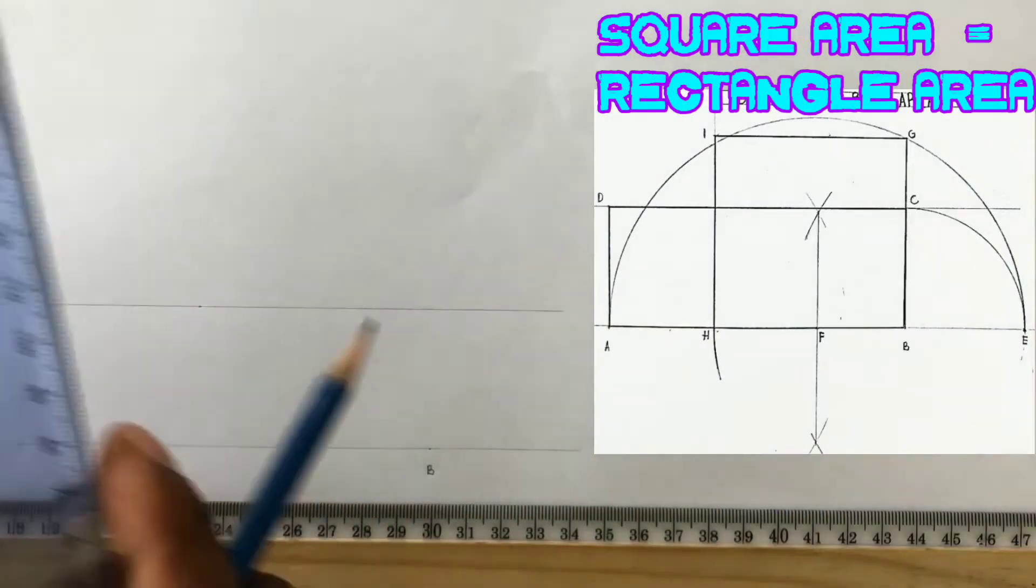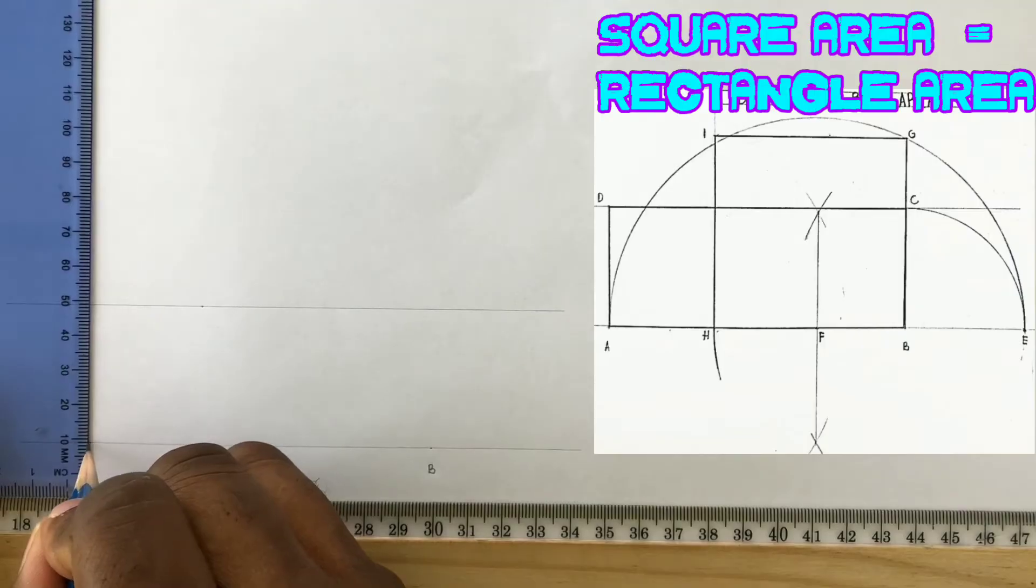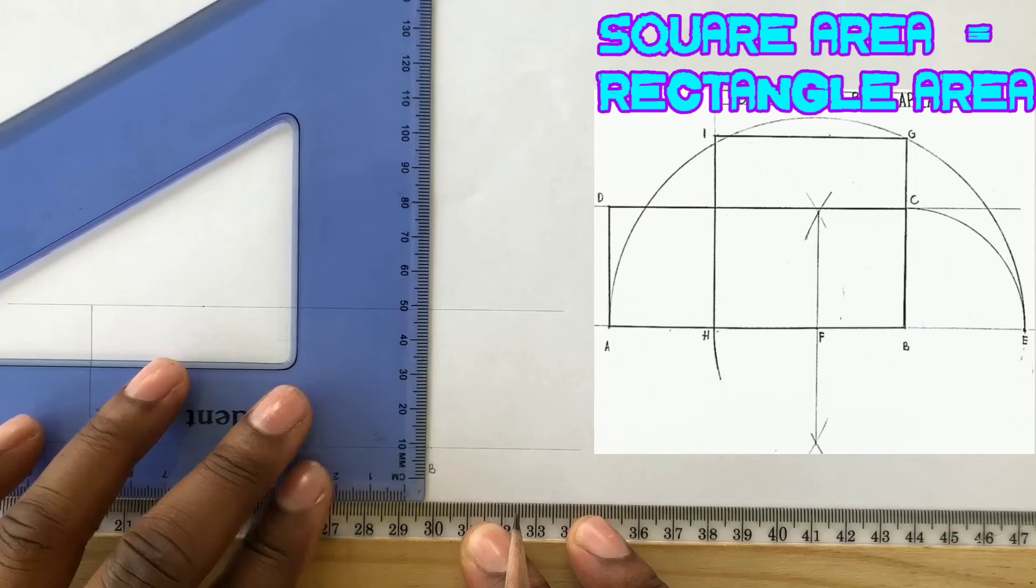Using your set square and your T-square, draw a perpendicular line from A to the parallel line. This will give you point D.